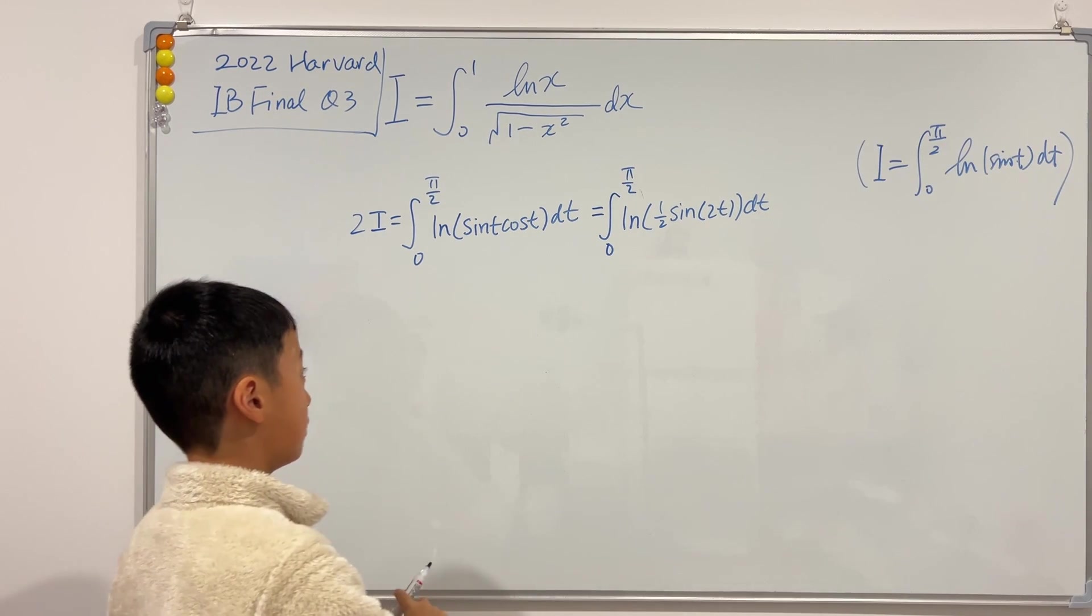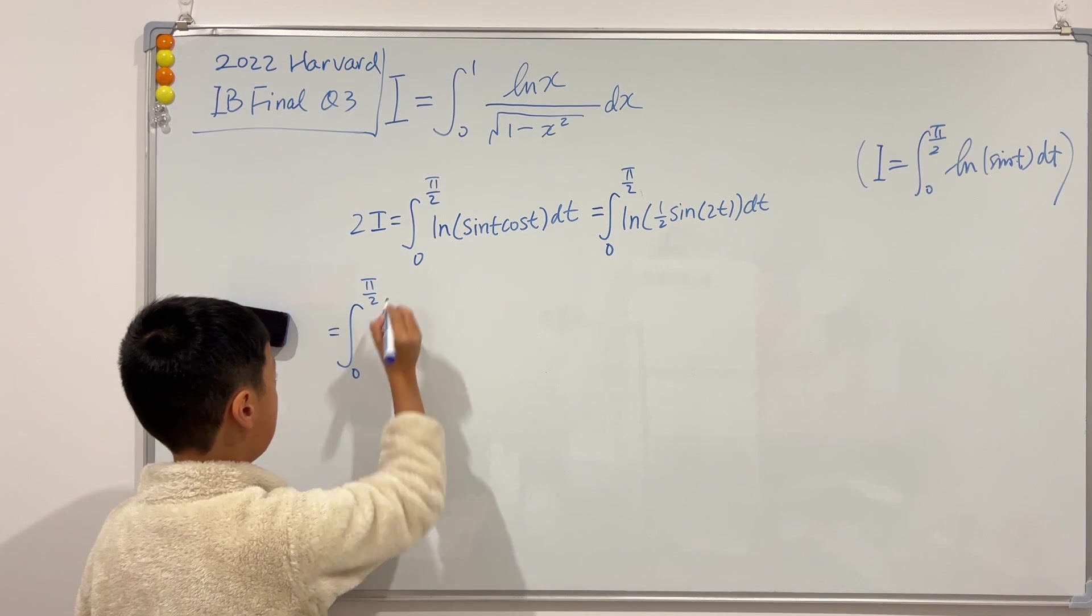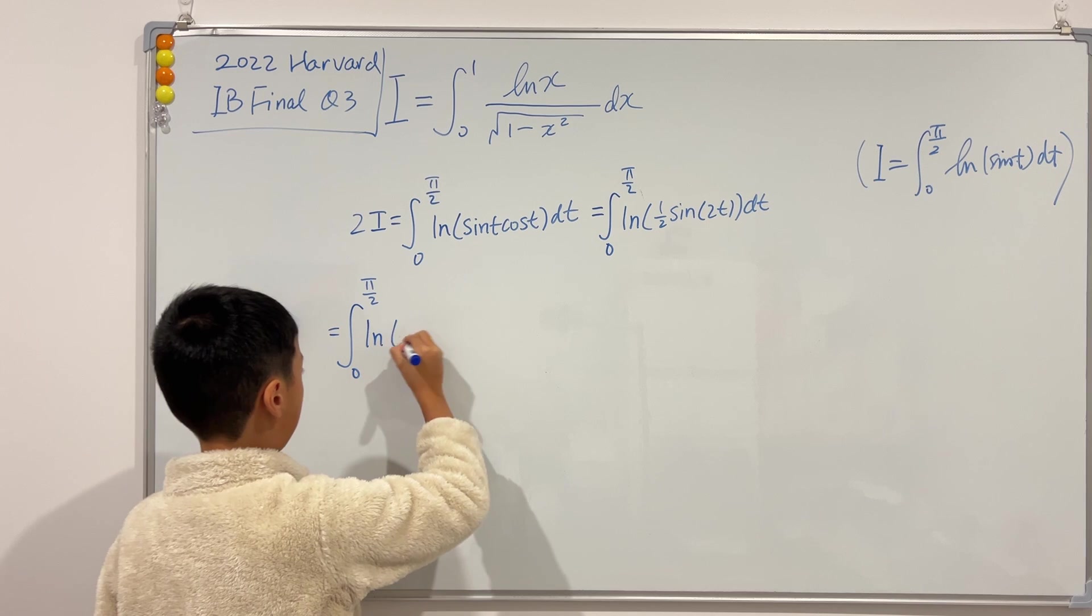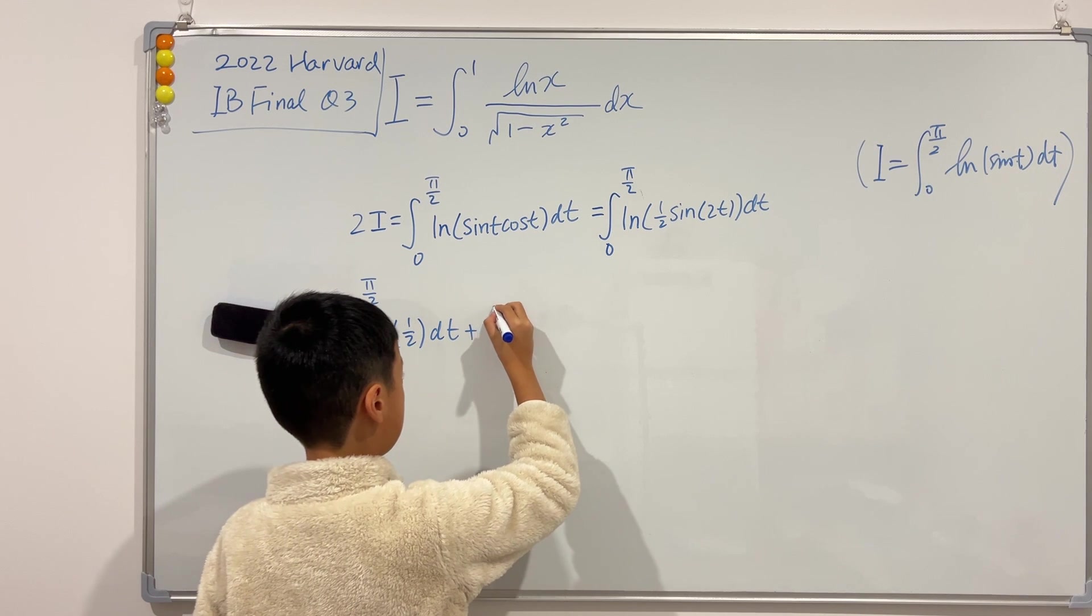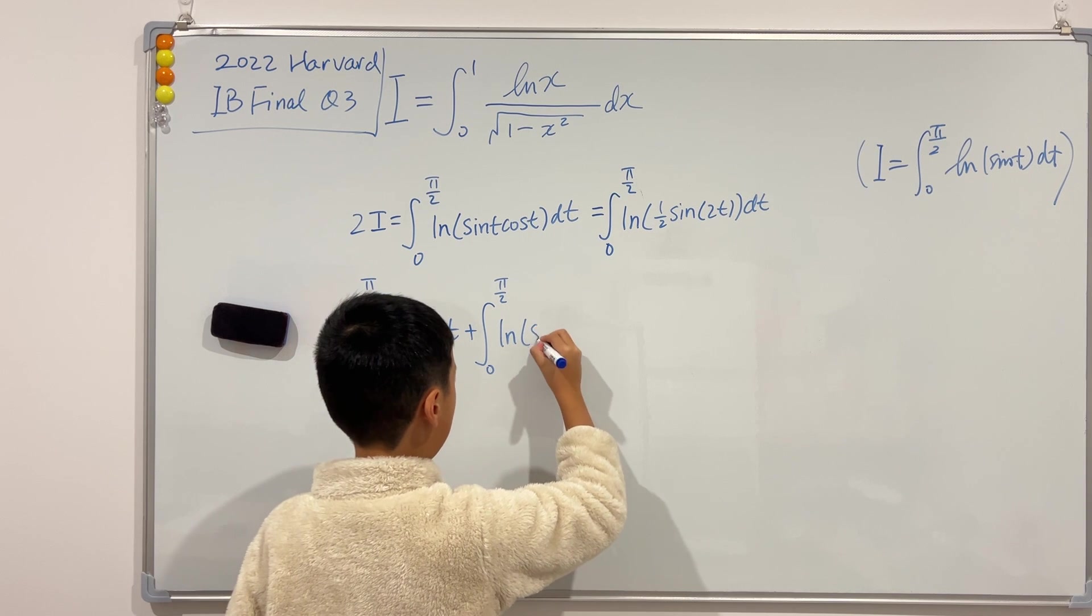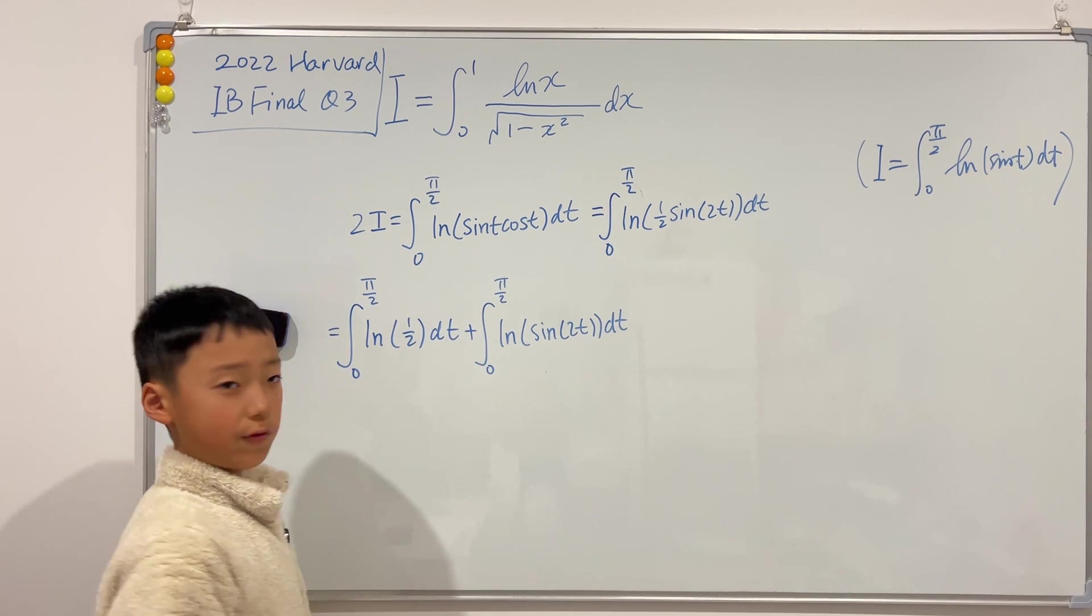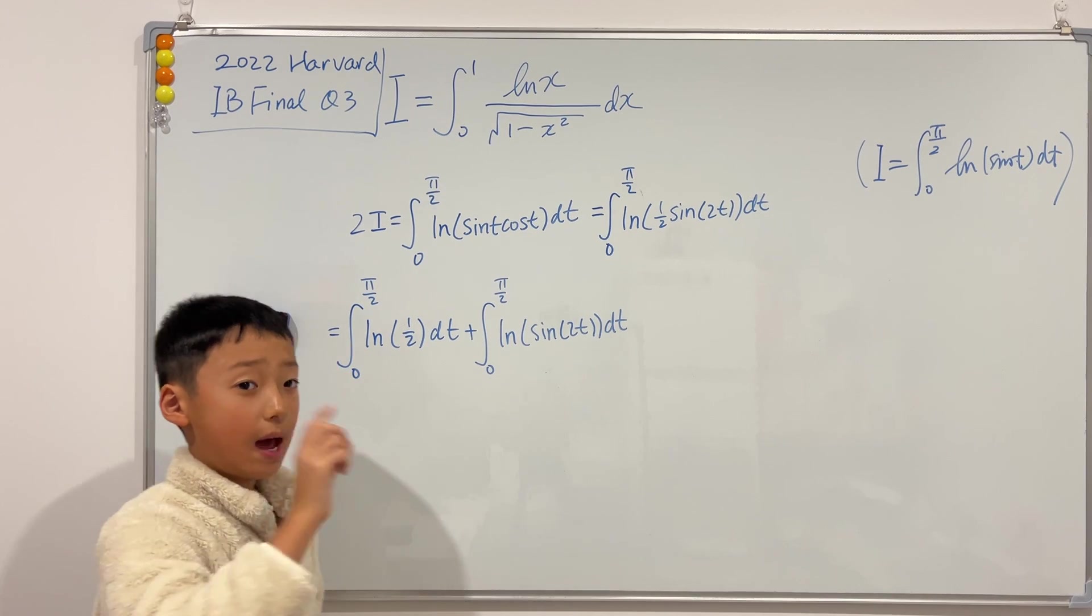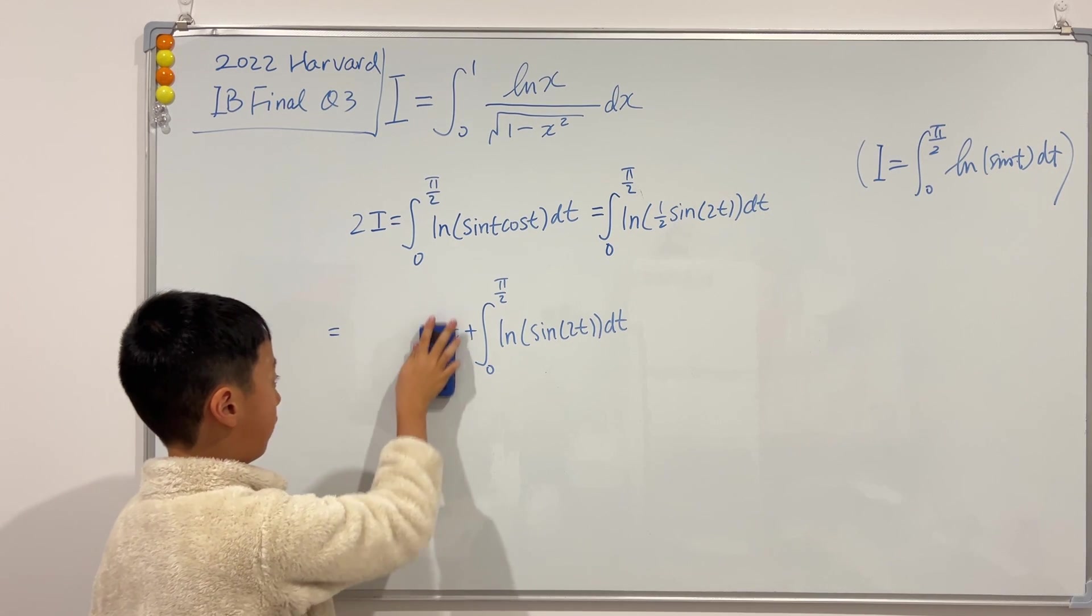So we can see that this is equal to the integral from 0 to π over 2 of... Like I said, we can separate this into two integrals. The first one is just ln of one half dt, and then plus the integral from 0 to π over 2 of ln of sine of 2t dt. And we can first evaluate this because this is super simple. The answer is t times ln of one over two. So in the bounds, we see that it will just be π over 2 times ln of one over 2.